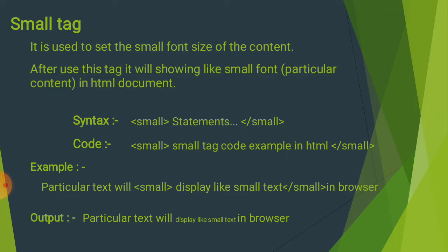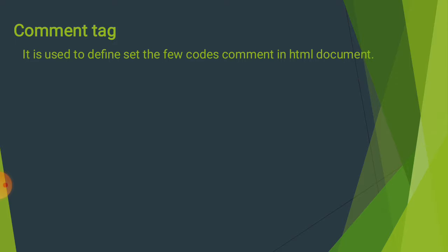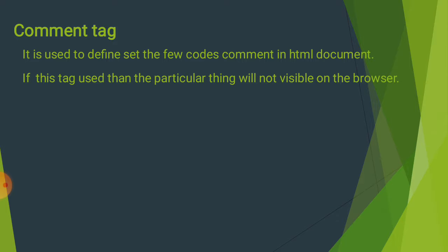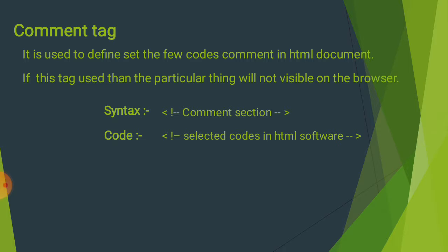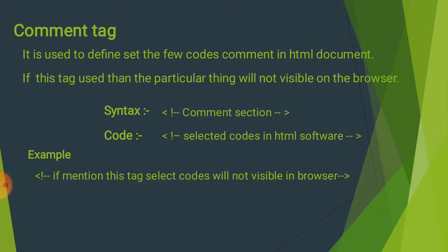Comment Tag: It is used to define and set few codes as a comment in the HTML document. अगर हम code delete नहीं करना चाहते और उसे hide करना चाहते हैं, तो comment tag use करते हैं। अगर comment tag use किया जाए तो वह particular content browser पर display नहीं होगा — code editor में रहेगा लेकिन browser पर visible नहीं होगा। HTML software में select code को comment tag में mention करते हैं तो वह browser output में visible नहीं होगा।